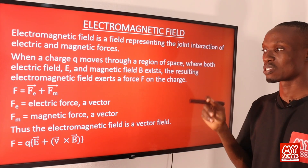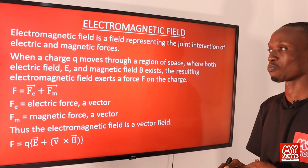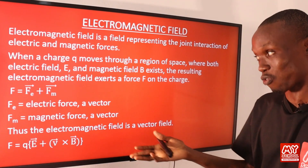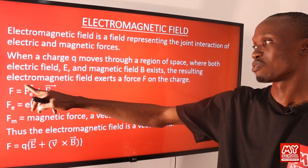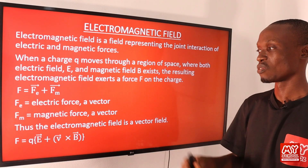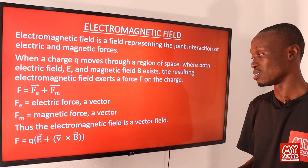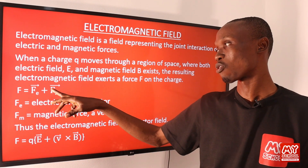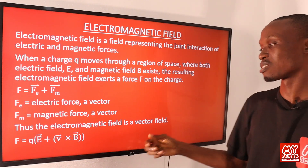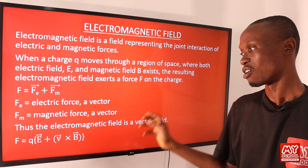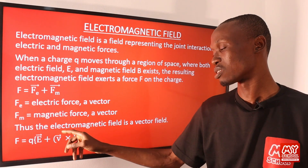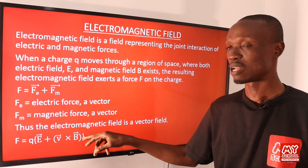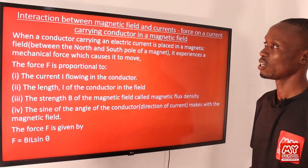Mathematically, the force on the charge F equals Fe plus Fm, where Fe represents the force of the electric field and Fm represents the force of the magnetic field — both are vectors. So F equals qE plus qvB, and factoring out q (which is common to both forces), we get F equals q(E + v×B), where E, v, and B are all vector quantities.